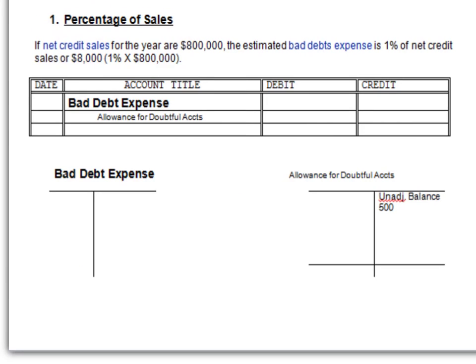Under this method, I can estimate using net credit sales. Why do we have three words in here? It's not simply regular sales. 'Net' meaning without returns and allowances, because there's nothing to collect for those. 'Credit' meaning cash sales will be excluded — they've already been collected. So in my example, I have net credit sales of $800,000, and I estimated that my bad debt expense is 1% of those sales. This estimate is based on historical data, what's going on in the industry, and what's going on in the economy.